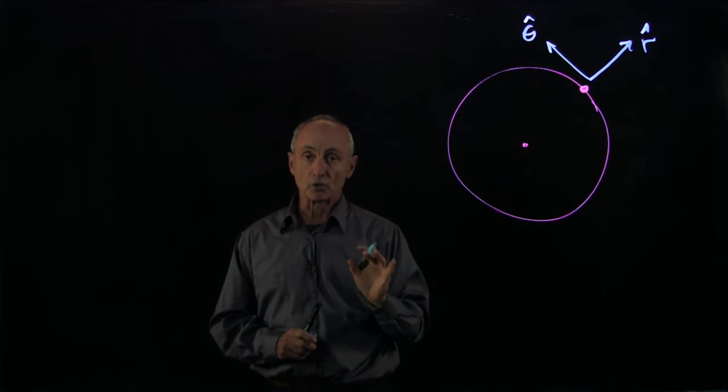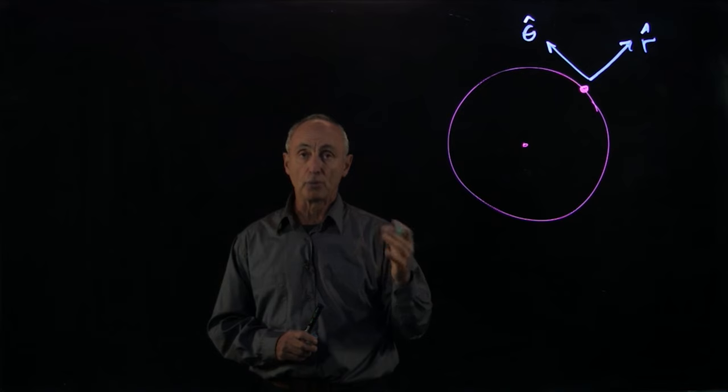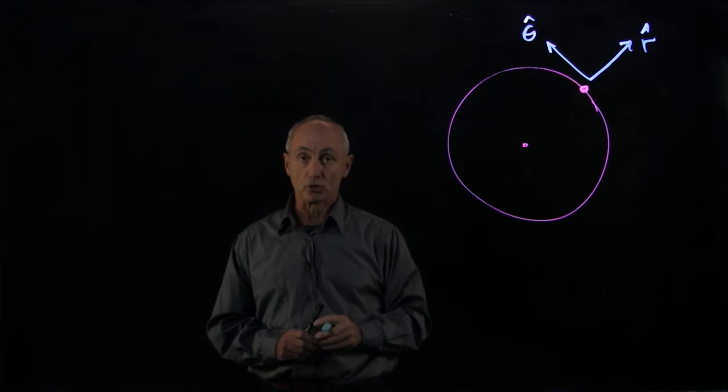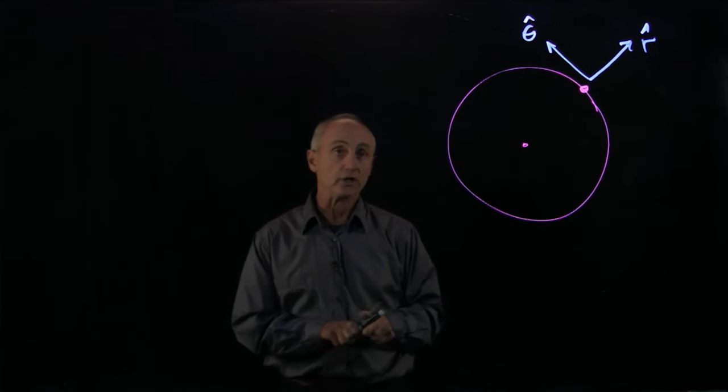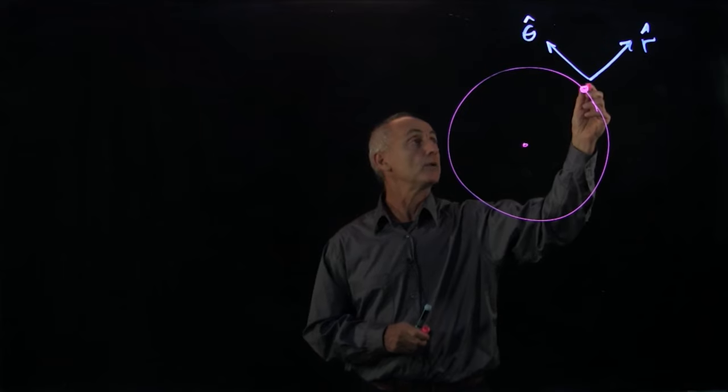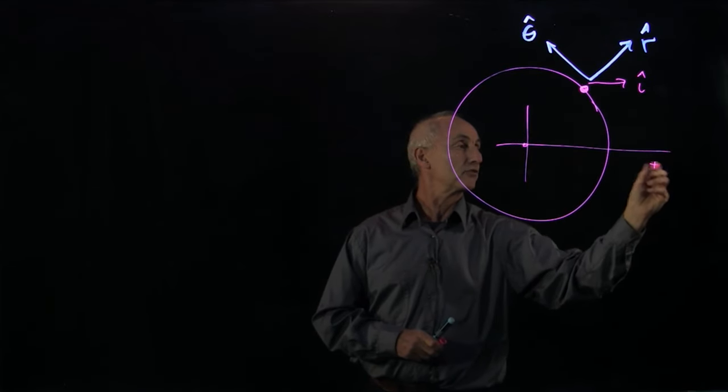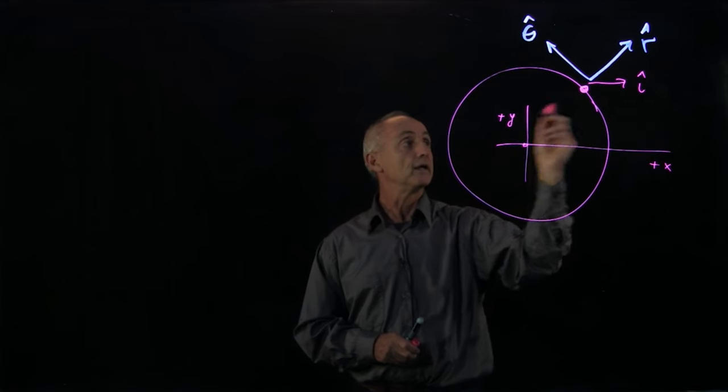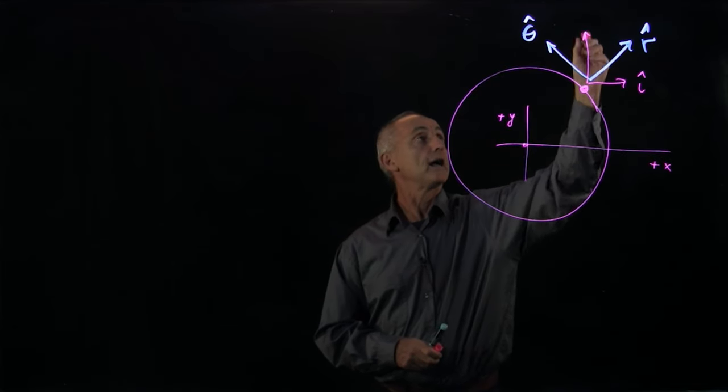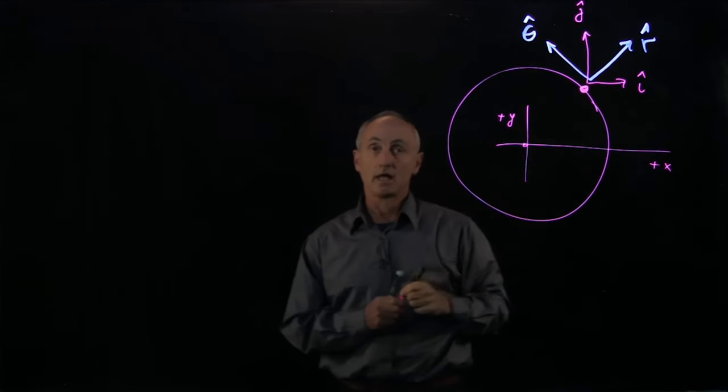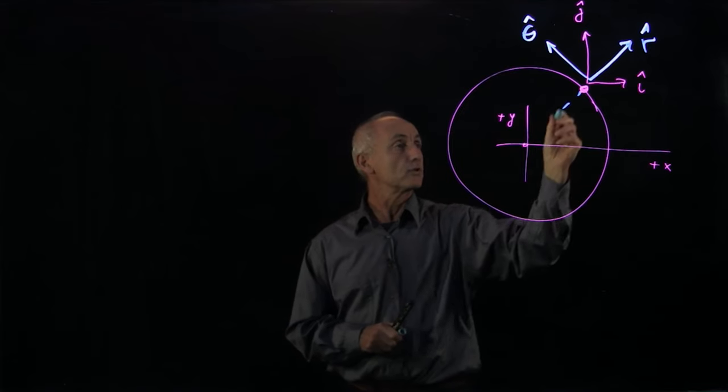We now want to address the question, how do I compare polar coordinates and Cartesian coordinates? In Cartesian coordinates, at this point here, let's say we choose a Cartesian plus x and plus y. Then we would have a unit vector i hat and j hat.